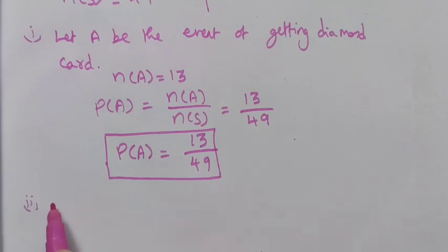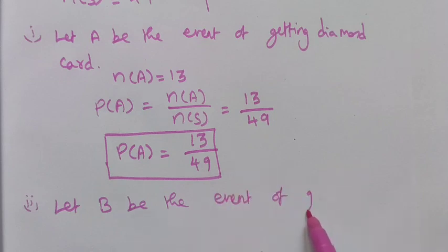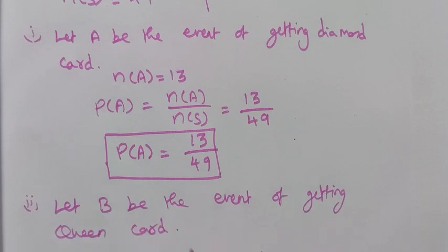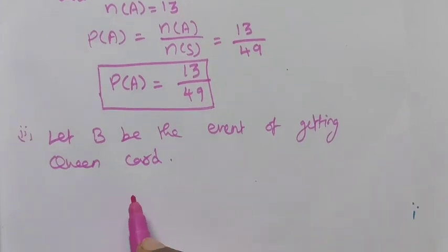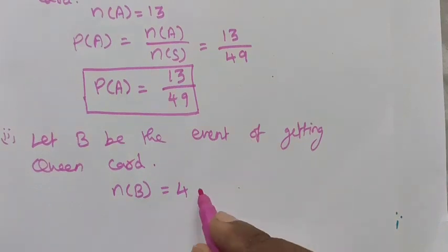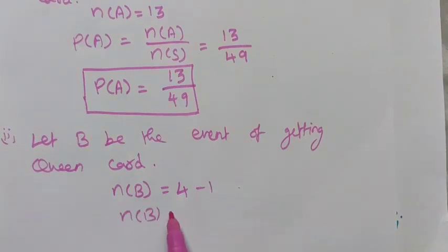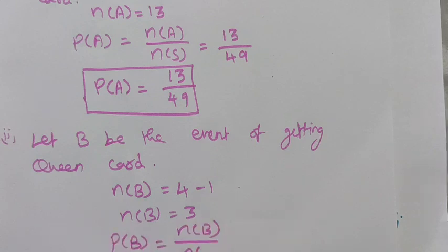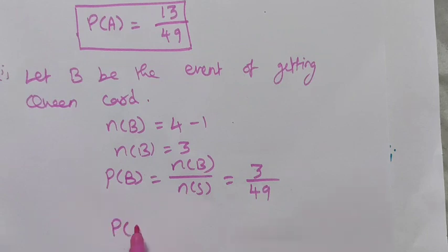Second: Let B be the event of getting a queen card. N(B) = 3, because one queen (spade queen) was removed, so only 3 queens remain. Probability of B = N(B) divided by N(S) = 3 out of 49. The probability of getting a queen card is 3 out of 49 cards.